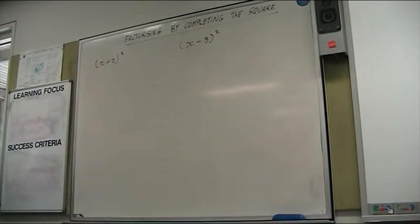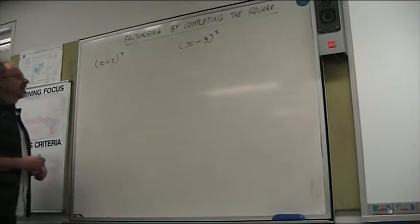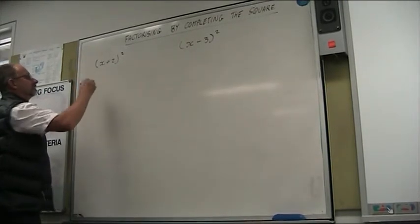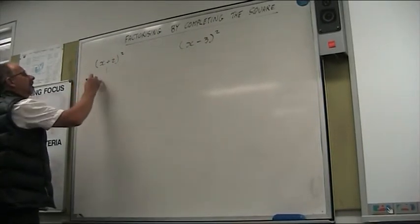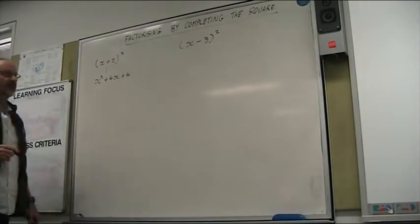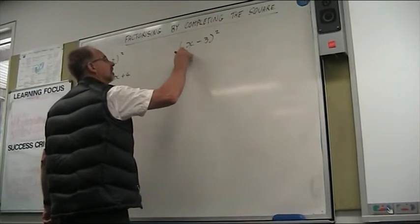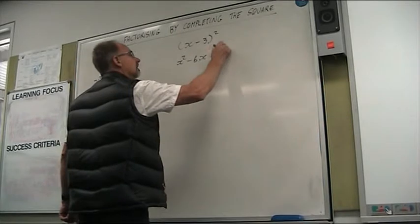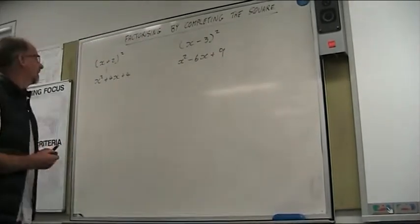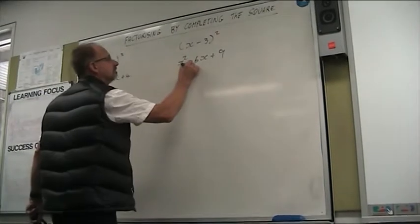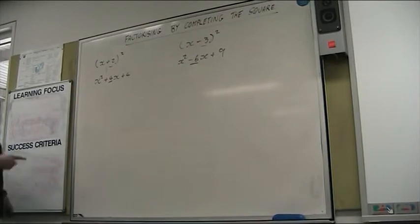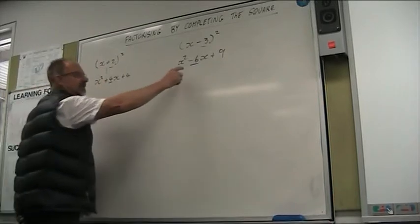Today we're looking at factorising by completing the square. Before we get on to that, there are a couple of things that are perfect squares. If I was to expand those — I'll do it in my head, but there'll be some working in between — we'd end up with x squared plus 4x plus 4 for x plus 2 squared, and for x minus 3 squared we'd end up with x squared minus 6x plus 9. So when we look at the numbers, the coefficient in front of the x and the number in the back of the bracket, what do you notice about these numbers?